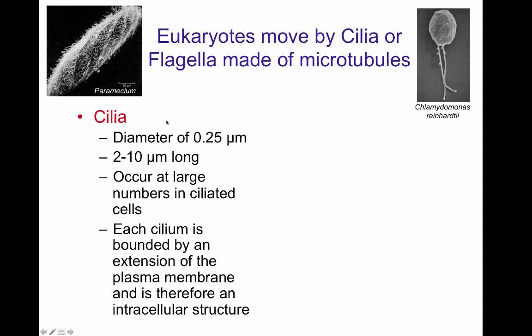As seen here in the paramecium on the upper left, cilia occur throughout the entire body of the organism, though some organisms will have them in specified locations. Each cilium is bound by an extension of the plasma membrane, making them internal organelles.